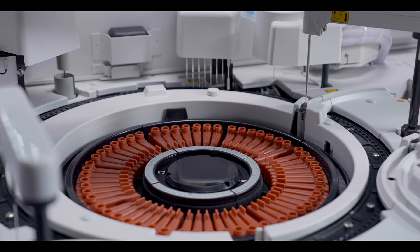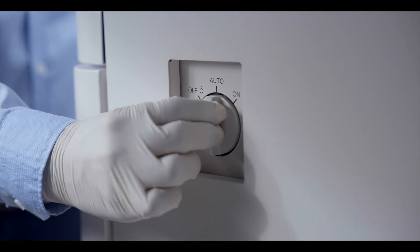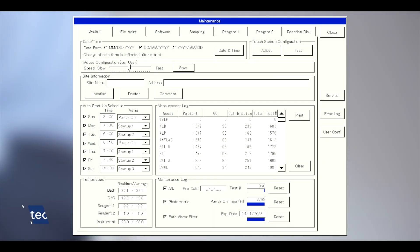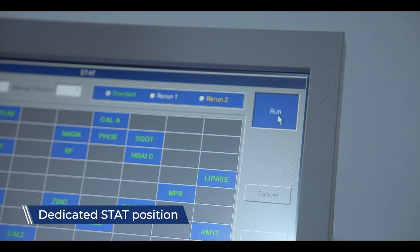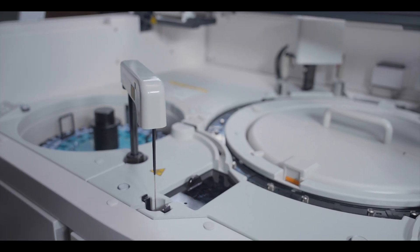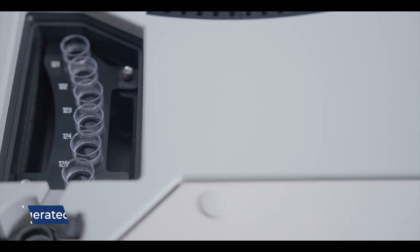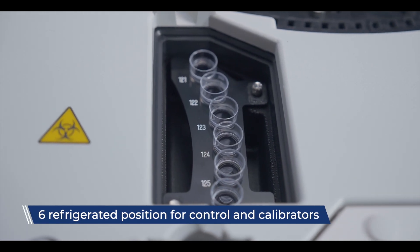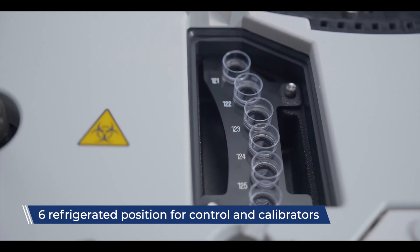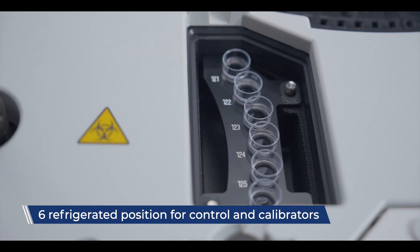Operating as a self-contained system, the TBA-120FR includes an auto-start function and a dedicated stat position, enabling rapid sampling in just 4.5 seconds. Additional six refrigeration positions at 2 to 8 degrees Celsius offer storage for controls and calibrators.